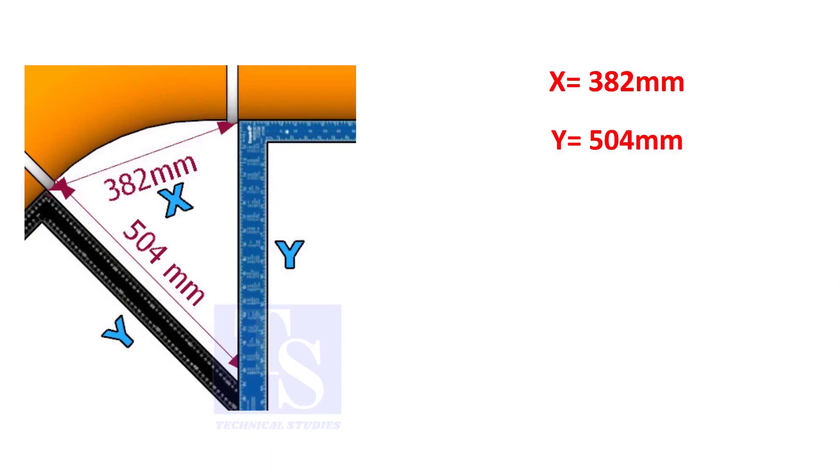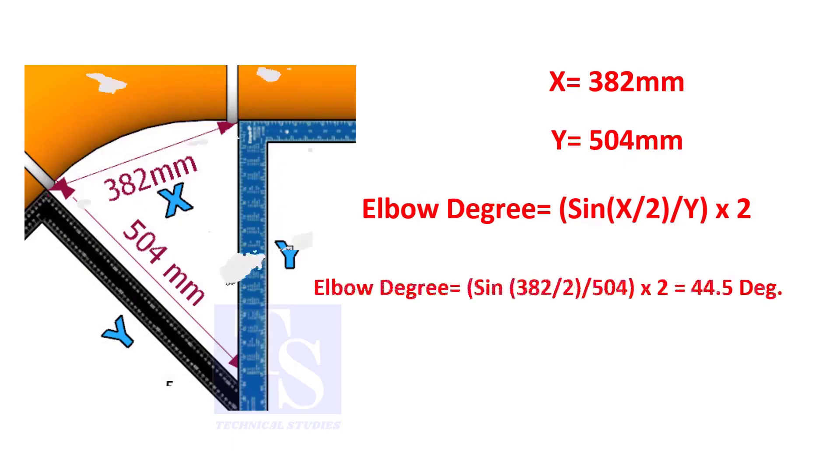Assume that the value of x is 382 and the value of y is 504. Divide the half value of 382 by 504 and convert the value to sine. Then multiply by 2.